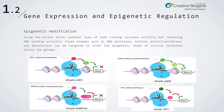The use of dCas9 — another type of Cas9 lacking nuclease activity but retaining DNA binding activity — fused with enzymes such as DNA methylase, a histone acetyltransferase, and deacetylase, allows dCas9 to be targeted to alter the epigenetic state of precise locations via the genome.